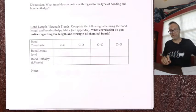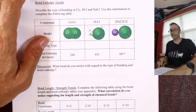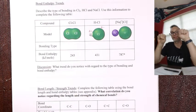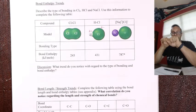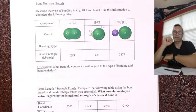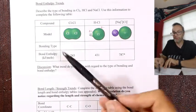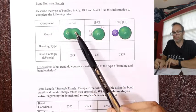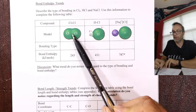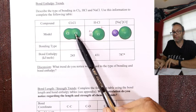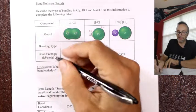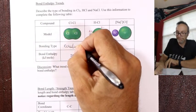Bond enthalpy trends: the more ionic character a bond has, the stronger it is. A plus and a minus attract each other really strongly - that's an electrostatic force. Because atoms are so tiny, those charges are really close together, so they're actually quite a strong bond. Looking at these materials: Cl₂ is a pure covalent bond - same electronegativity, electrons right in the middle. That's 100% pure covalent.